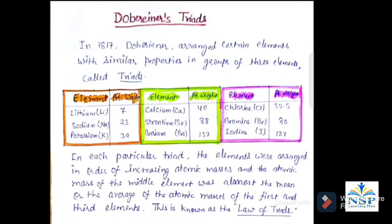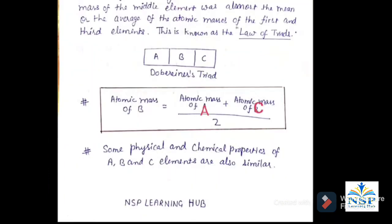The atomic mass of the middle element was almost the mean of the atomic masses of the first and third elements. This is known as the Law of Triads. According to Dobereiner's Law of Triads, if there are three elements A, B, and C, then the atomic mass of B is always the average of the atomic masses of A and C.